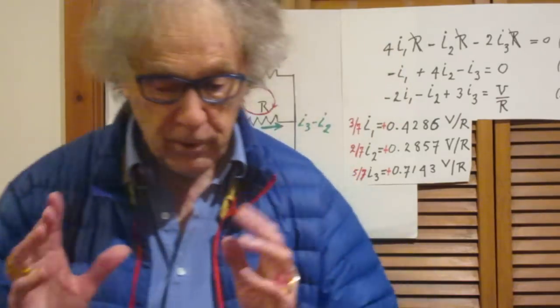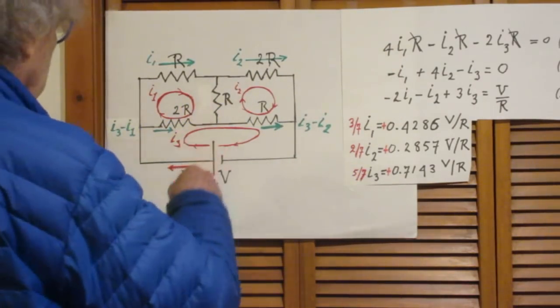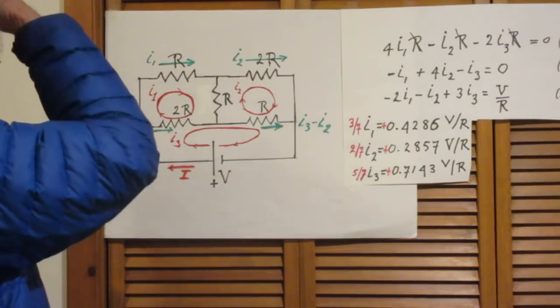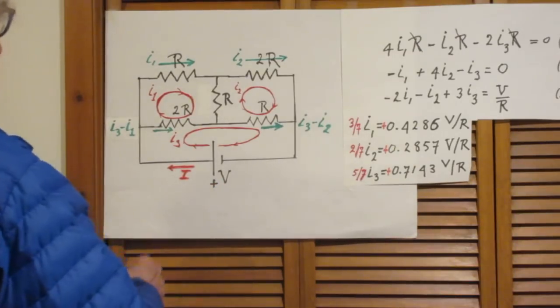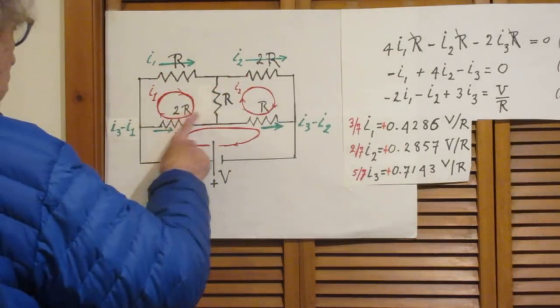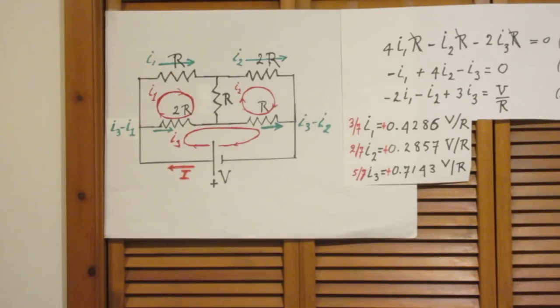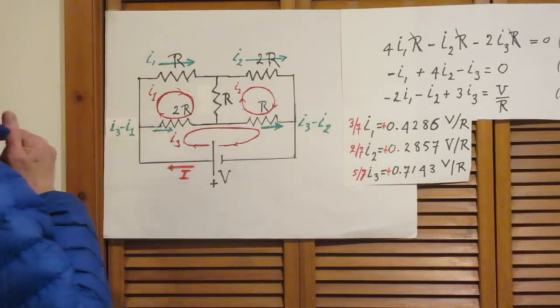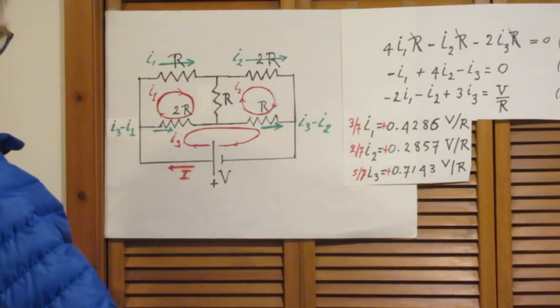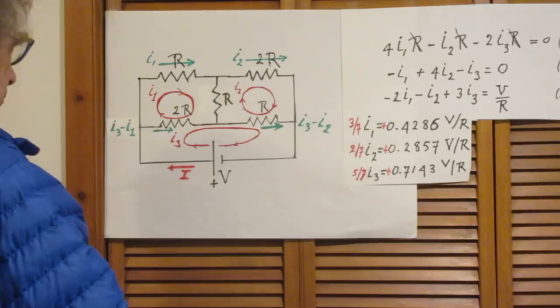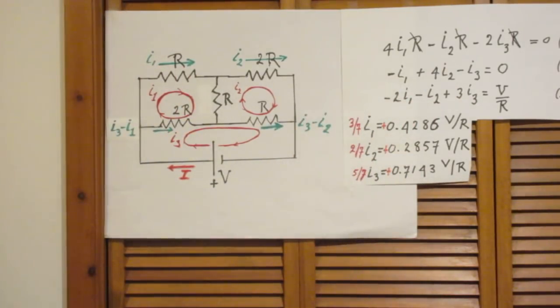Are you ready? Here we go. This is the circuit with five resistors, a battery R, 2R, 2R, R, and the question was for you to calculate these values I1, I2, and I3.